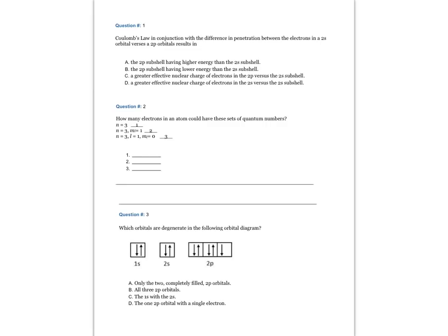Question number one: Coulomb's law in conjunction with the difference in penetration between the electrons in a 2s orbital versus a 2p orbital results in the answer A, the 2p subshell having higher energy than the 2s subshell.